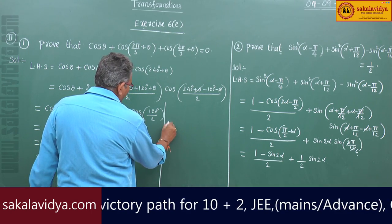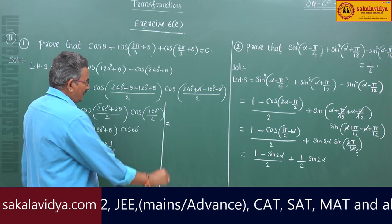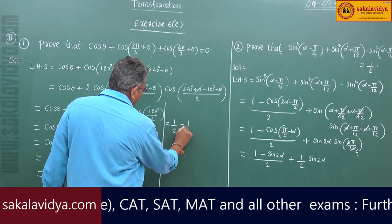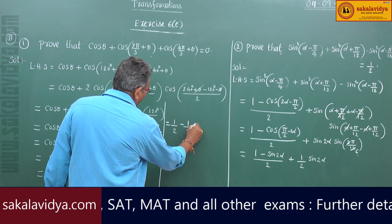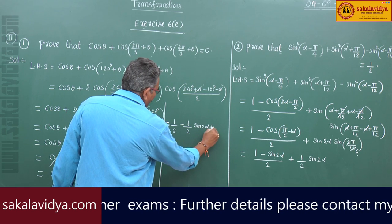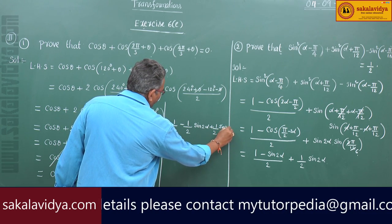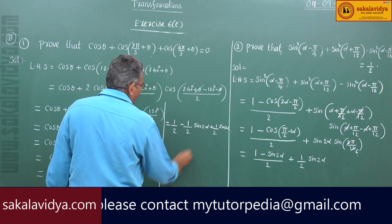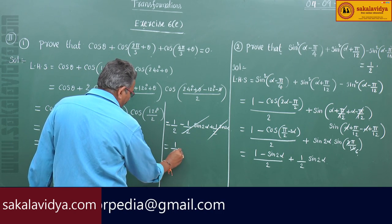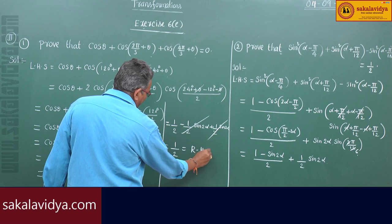This can be written as 1/2 - (1/2)·sin2α + (1/2)·sin2α. The sin2α terms cancel, leaving 1/2, which is equal to the right hand side.